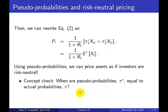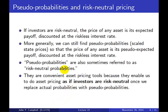As a concept check: when pseudo probabilities equal actual probabilities, that requires investors to be literally risk neutral. If investors are risk averse, the pseudo probabilities will not be the same. The key insight is that if investors are literally risk neutral, asset pricing is easy — the price is just the expected payoff discounted at the riskless rate. These pseudo probabilities, also called risk-neutral probabilities, allow us to proceed as if investors are risk neutral by replacing actual probabilities with pseudo probabilities.